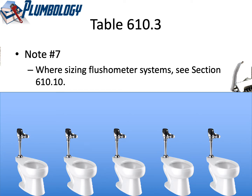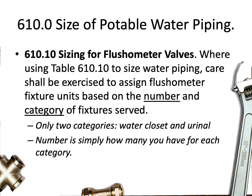Note number 7 is telling us that when sizing flushometer systems, we need to go see Section 610.10. We already looked at part of that section; next we'll look at the second half. We're using Table 610.10 to size water piping. Care shall be exercised to assign flushometer fixture units based on the number and category of fixtures being served. Here again we see that number and category language. The number part is very simple — how many do you have? Just keep counting. The category has only two options: it's either a water closet flushometer valve or a urinal flushometer valve.